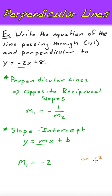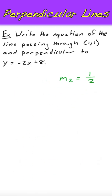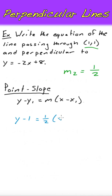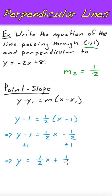The opposite reciprocal would be positive 1 over 2, so our slope is 1/2. Now we can use point-slope form since we have a slope and a given point. Plugging in our point for and our slope for m, we have y minus 1 equal to. Distributing the 1/2 and solving for y gives us a final answer of y equal to.